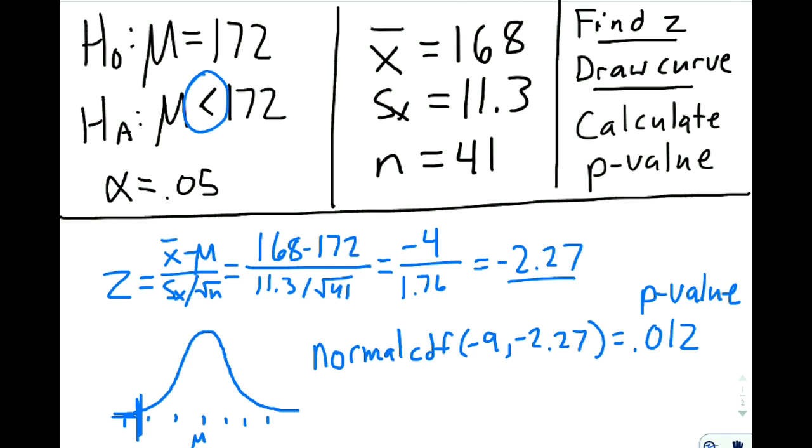The p-value is always going to be the area under the curve. So the less than said I should be going from this value and looking left or down, and so that's how I knew to shade that region. P-value of 0.012.